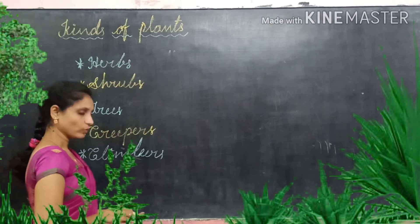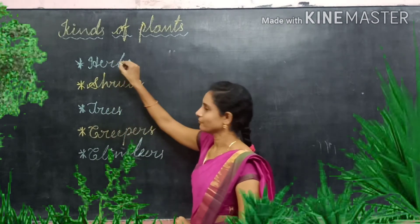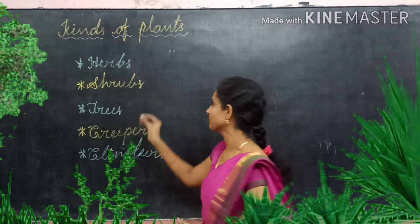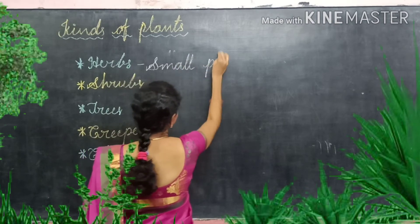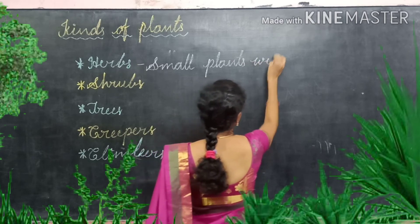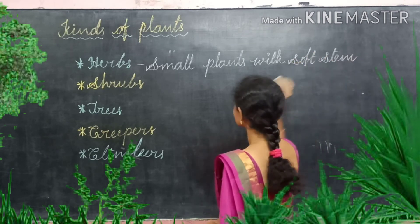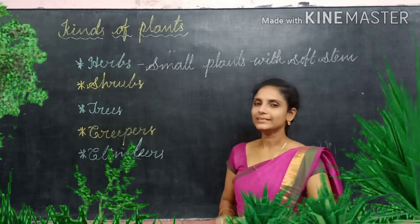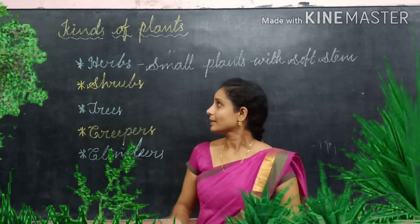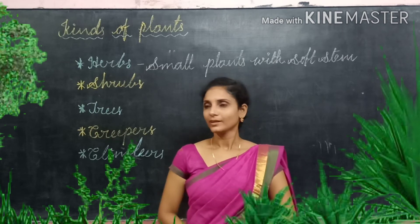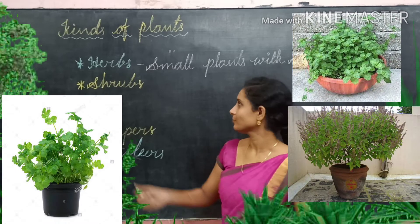The first type is herbs. A very small plant with a soft stem is called a herb. These are very small plants with a soft stem. Some herbs have medicinal values and some herbs are used to add flavor to food. Examples of herbs are mint and tulsi.